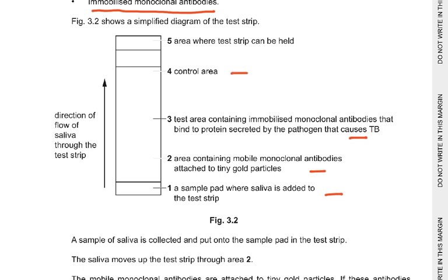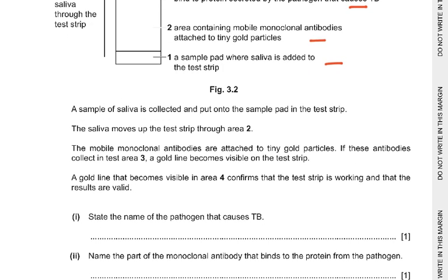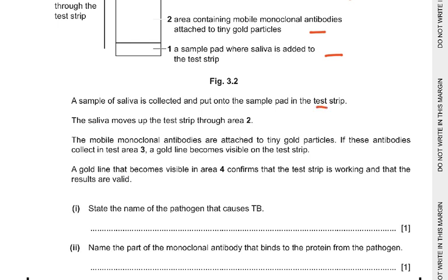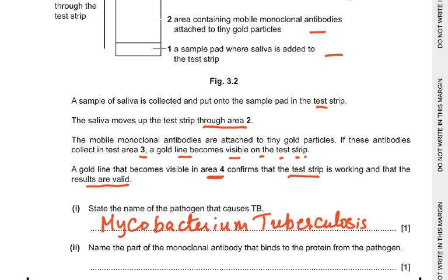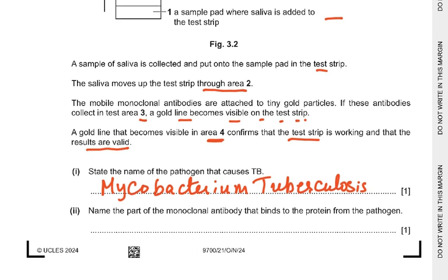Saliva is added to the sample pad and moves up through area 2. If the mobile monoclonal antibodies collect in test area 3, a gold line becomes visible — a positive result. A gold line in area 4 confirms the test is working and results are valid. Name the pathogen causing TB: Mycobacterium tuberculosis (or Mycobacterium bovis). Name the part of the monoclonal antibody that binds to the protein: the antigen binding site, also called the variable region.